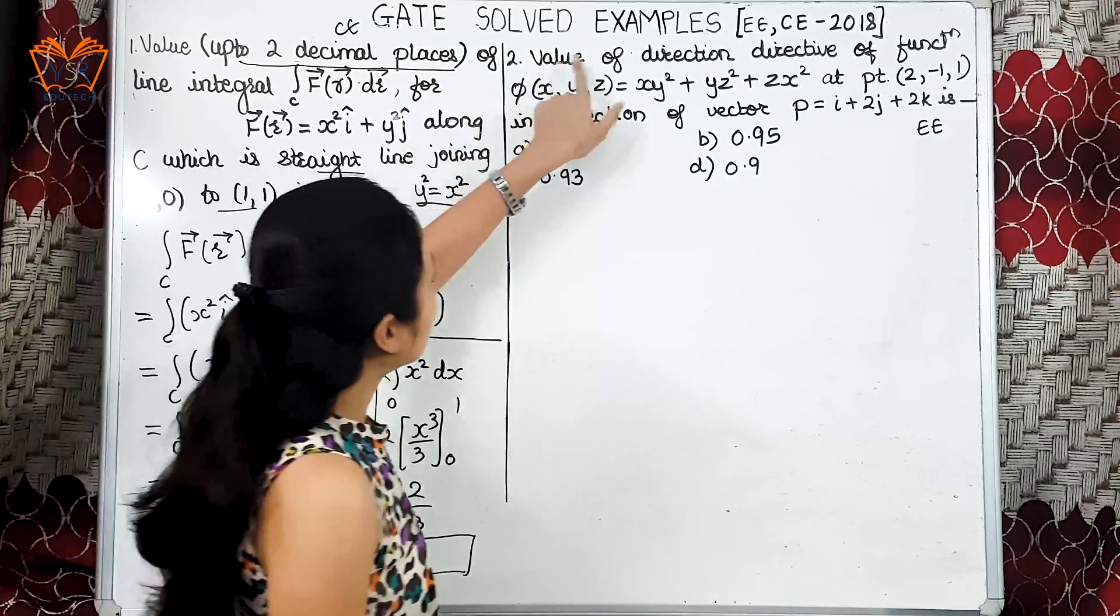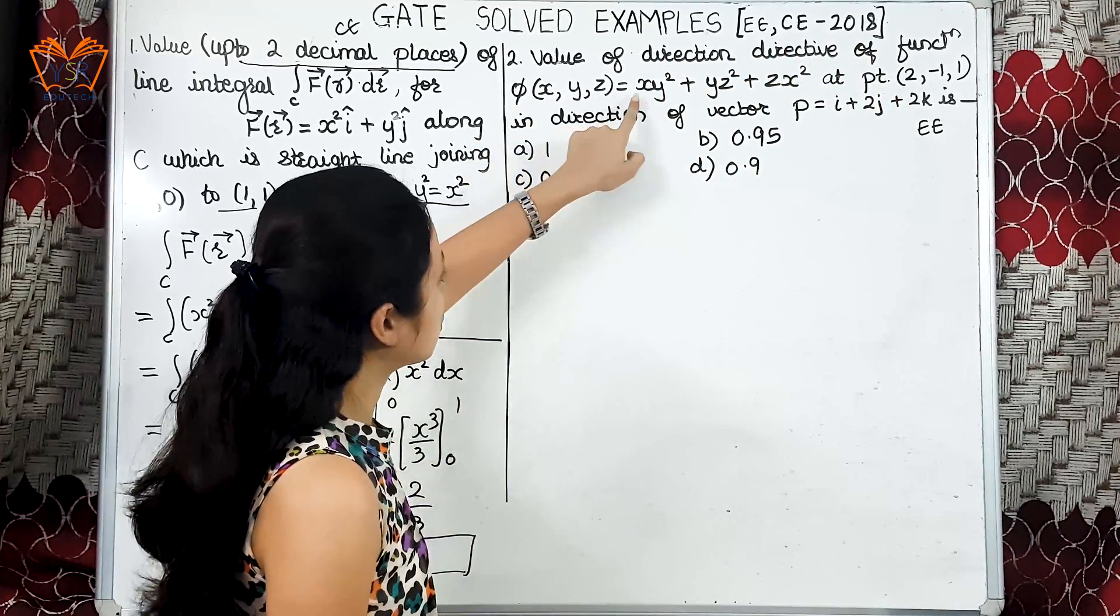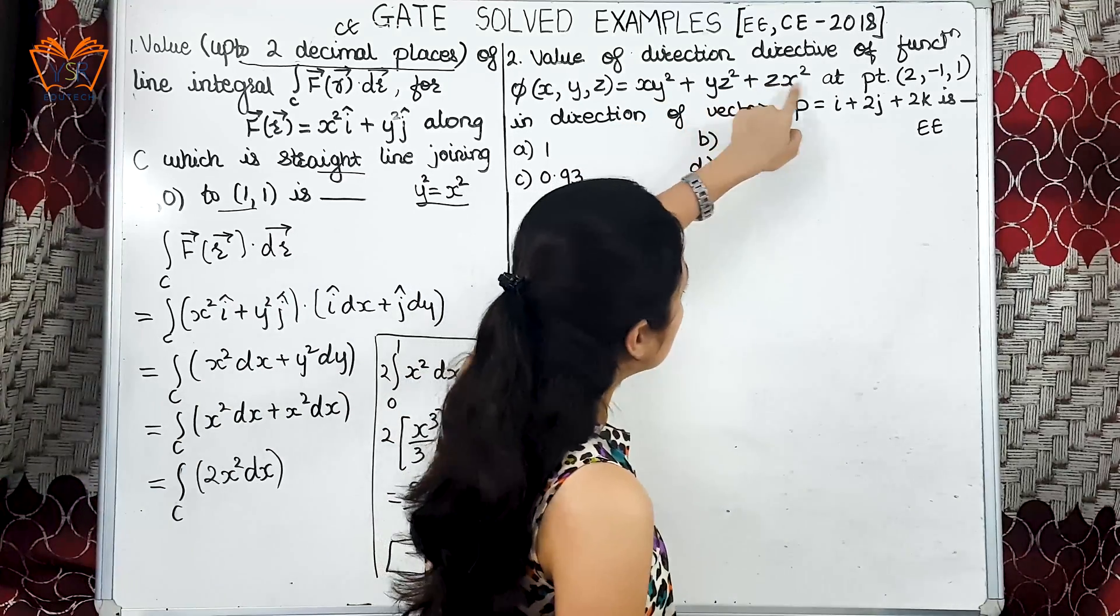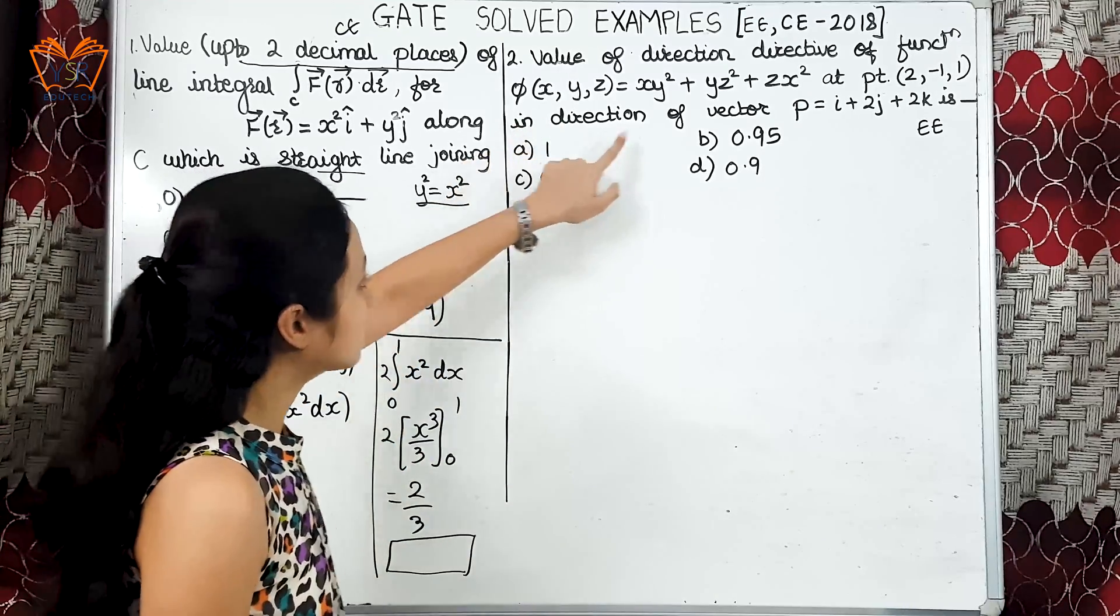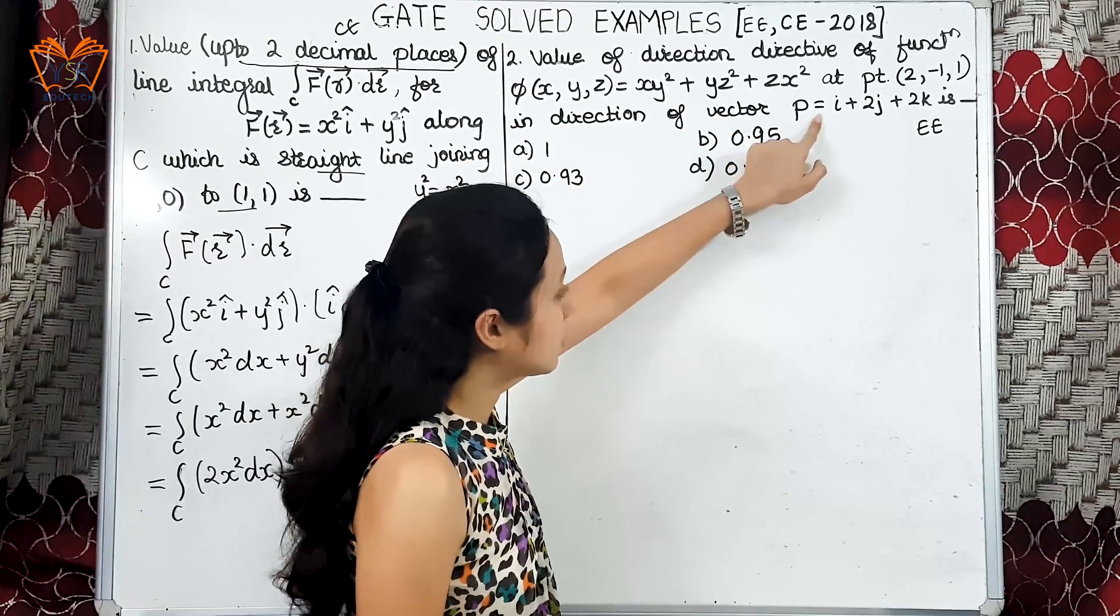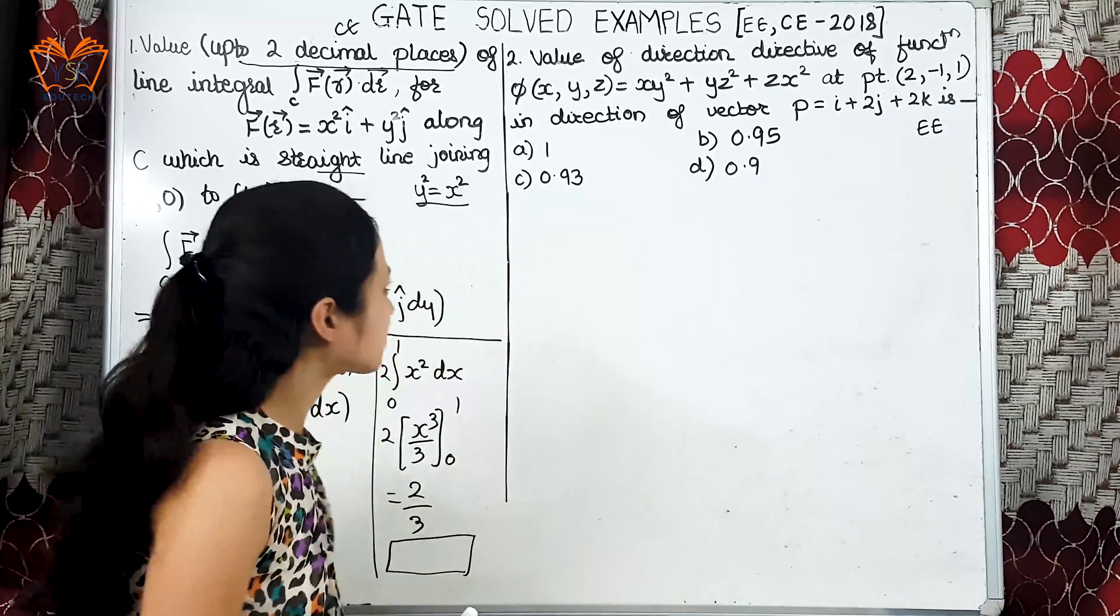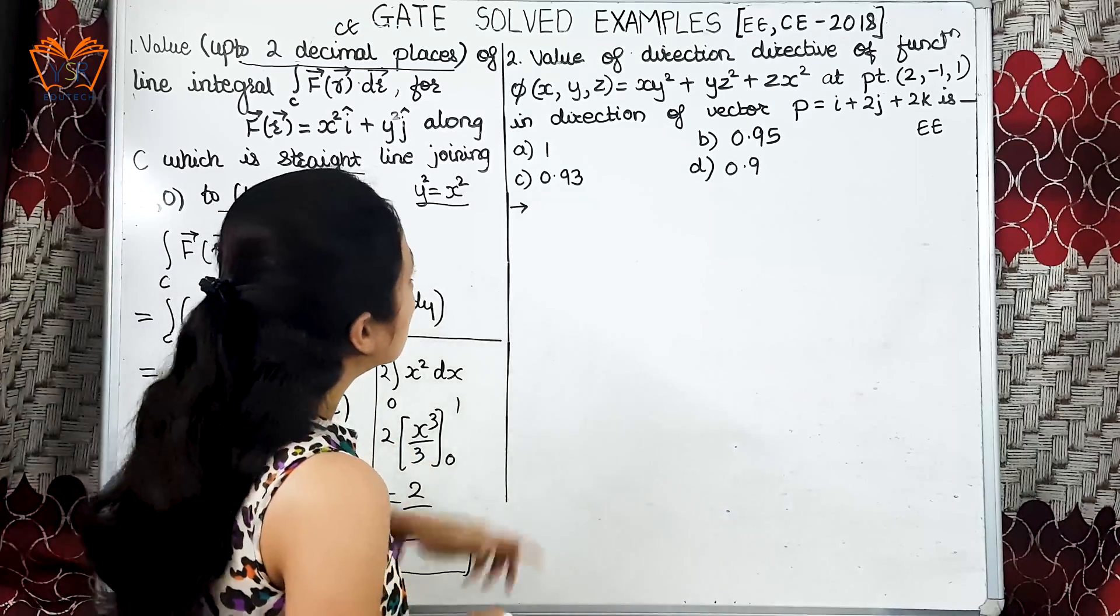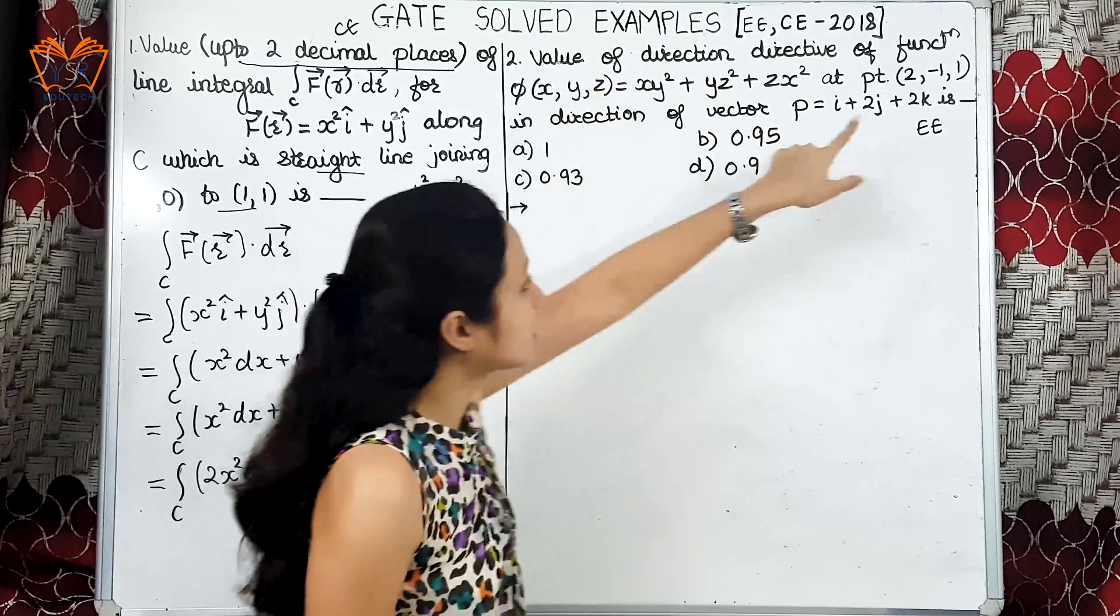Second example: Value of direction derivative of function phi of x,y,z is equal to xy square plus yz square plus zx square at point (2, -1, 1) in the direction of vector p is equal to i plus 2j plus 2k. These are the four options that they have given.